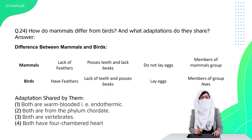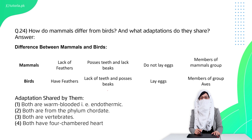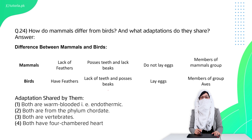Question 24 is: how do mammals differ from birds, and what adaptations do they share? Differences: mammals have fur rather than feathers, birds do not have teeth while mammals generally do, and birds lay eggs while mammals do not. Shared adaptations: both are warm-blooded, have four-chamber hearts, a highly efficient respiratory system, and are advanced vertebrates.